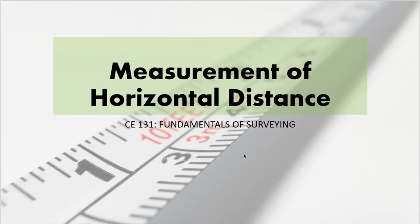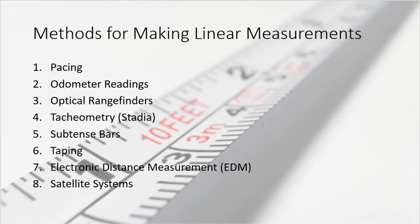There are different methods for making linear measurements. First and the least precise is pacing; second is the odometer reading; then we have optical range finders, geometry or stature, subtense bar, taping, electronic distance measurement, and satellite systems.